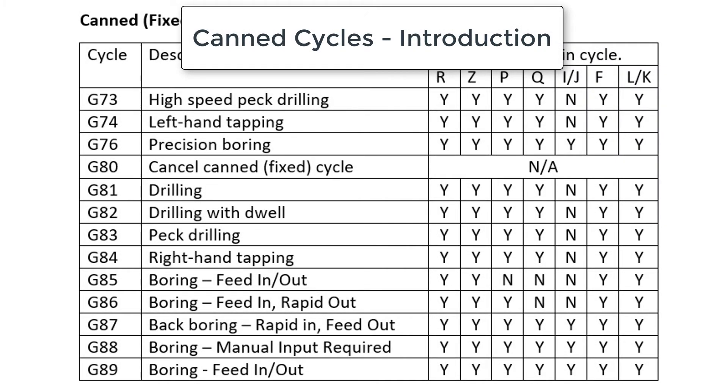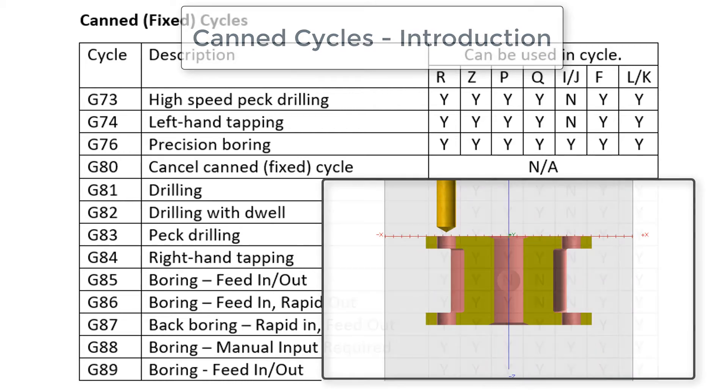In this video I'll briefly explain where each canned cycle is typically used. I'll start at the top of the list with the G73.